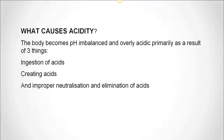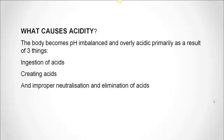What causes acidity? The body becomes pH imbalanced and overly acidic primarily as a result of three things: ingestion of acids, creating acids, and improper neutralization and elimination of acids. The first one — ingestion — includes ingestion of processed foods, sugar, packaged foods, takeaways, fast food, meat, dairy, coffee, alcohol, etc. They all lower the pH of the body, and an overload can overwhelm your body's ability to neutralize them.